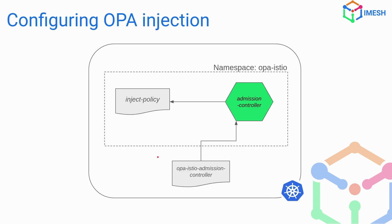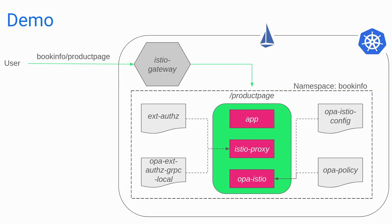To configure the injection itself — similar to how we use `istio-injection=enabled` in namespace labels to trigger a sidecar injection — we'll set up a webhook controller that listens for a particular label. If that label is set to true, it will call the admission controller, which has an injection policy. That injection policy tells the admission controller how to add the OPA container into the pod.